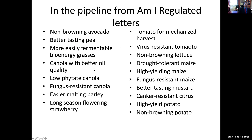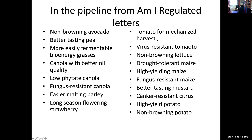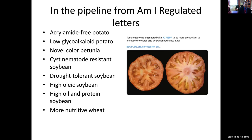In research labs in the United States and other countries, we have many other products: canola with better oil quality, low-phytate canola so that nutrients are more easily available, fungus-resistant plants, easier malting barley for beer production, strawberry with flowers and a longer season, tomato constructed for mechanized harvest, disease-resistant tomatoes, and drought-tolerant maize. As you can see, for a variety of traits, we are now using gene editing.